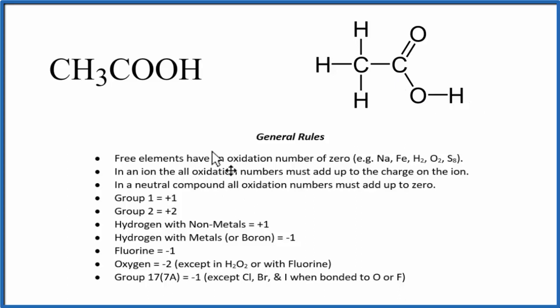So the first thing we need to understand is when we're finding the oxidation numbers in a neutral compound, these are neutral because there's no plus or minus charge written out here. In a neutral compound, all the oxidation numbers for each element add up to zero. And that's going to be important for us to remember.